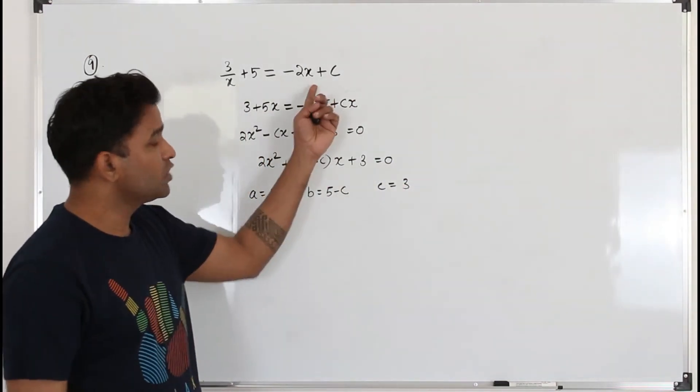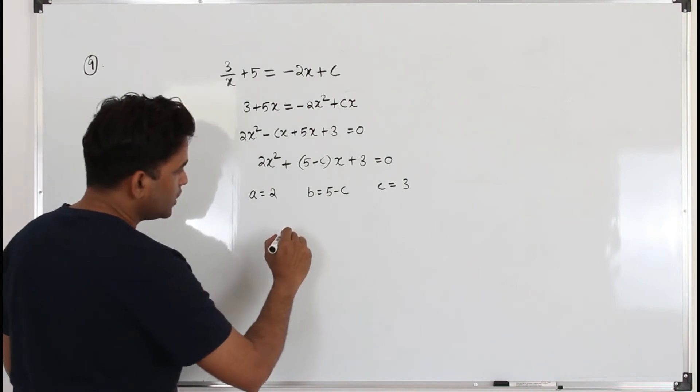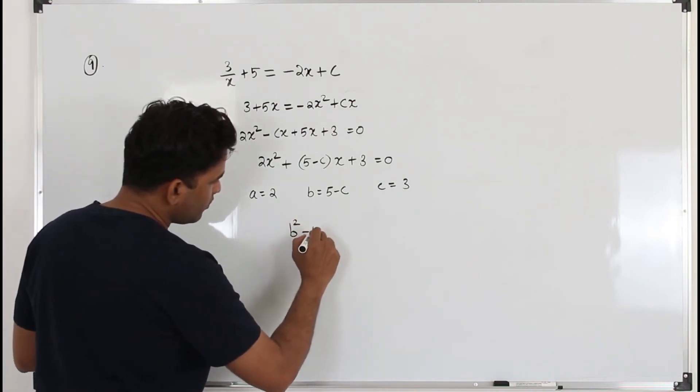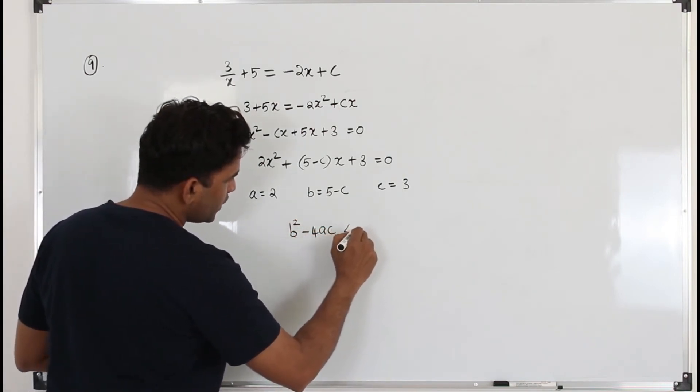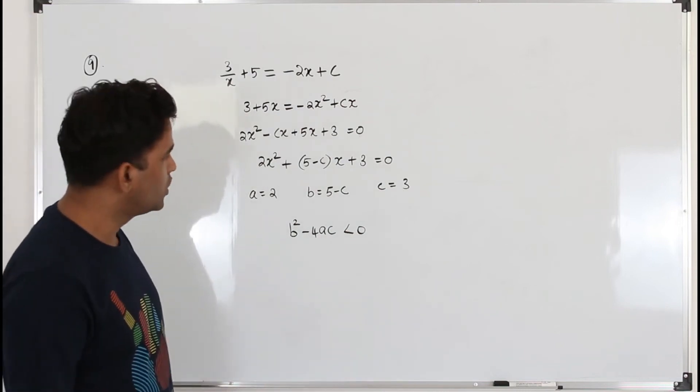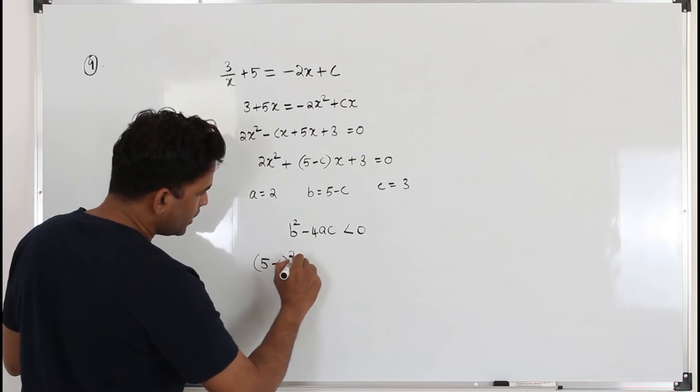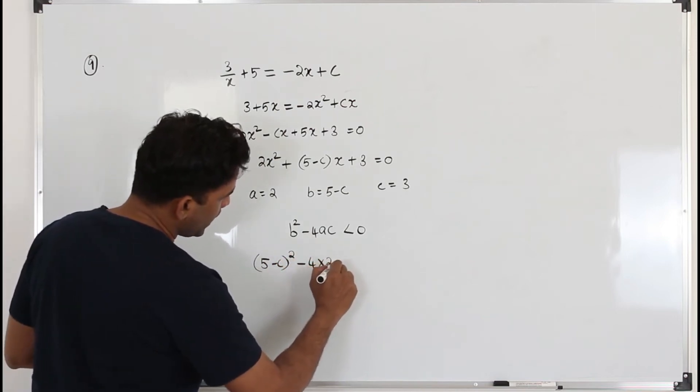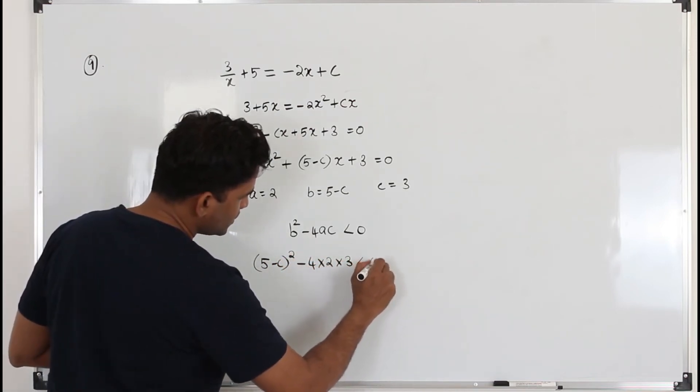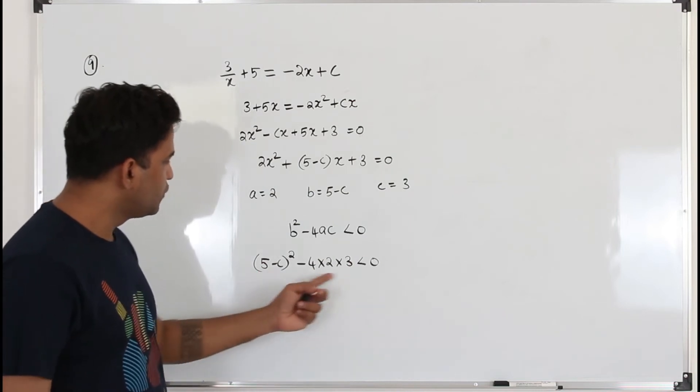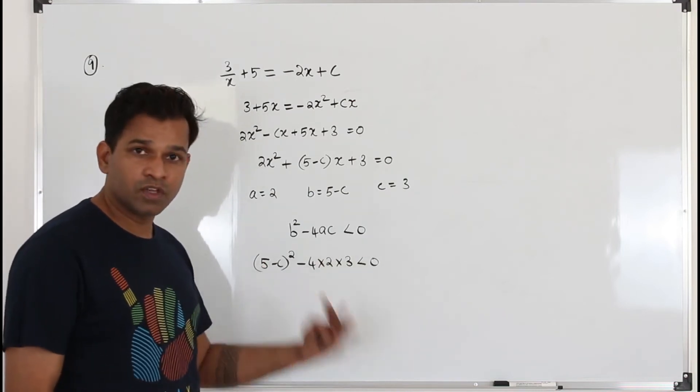Now if the function has no real roots, you must have learned this in the topic discriminant. b² - 4ac should be less than 0. So b², (5 - c)² minus 4ac should be less than 0. So you need to frame a quadratic equation in terms of c and solve.